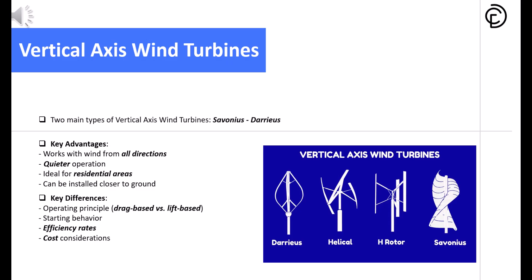Focusing on vertical axis wind turbines, there are two main types: the Savonius and the Darrieus turbines. These VAWTs come with some impressive advantages. First, they're not picky about wind direction — they work with wind coming from any direction. They're also more compact than their horizontal axis cousins, with lower height requirements and can be installed closer to the ground. Their quiet operation combined with compact size makes them ideal for residential and urban settings.